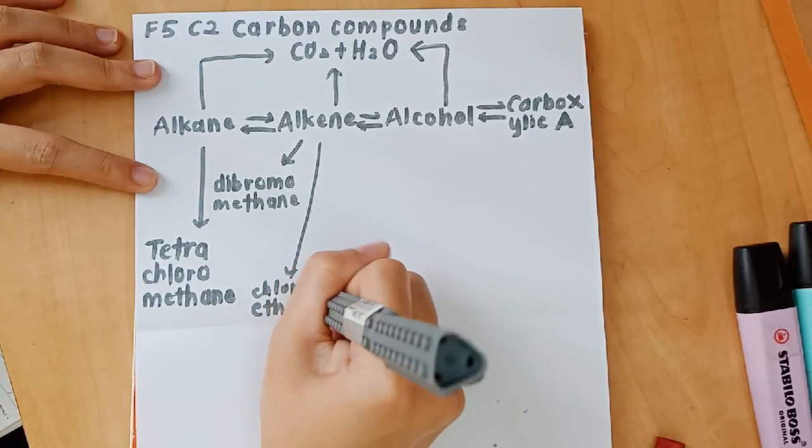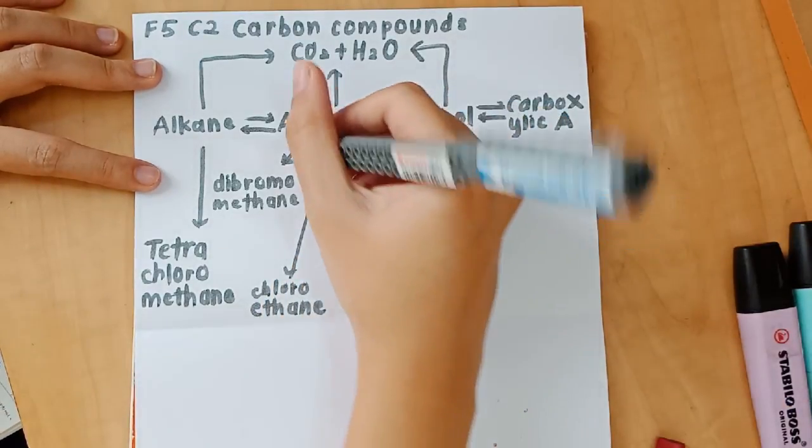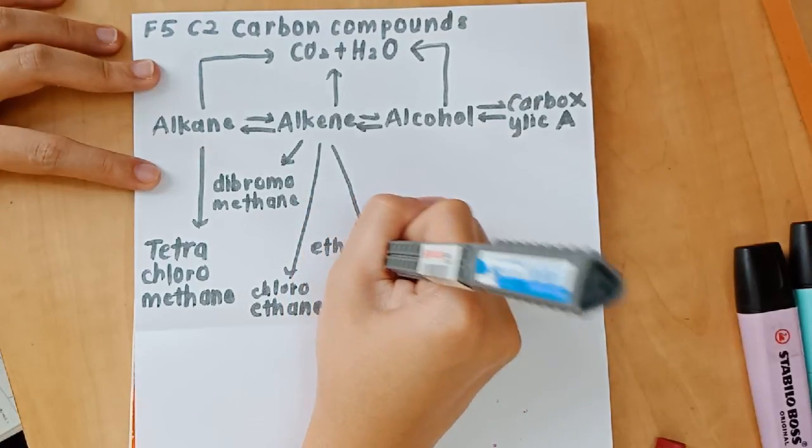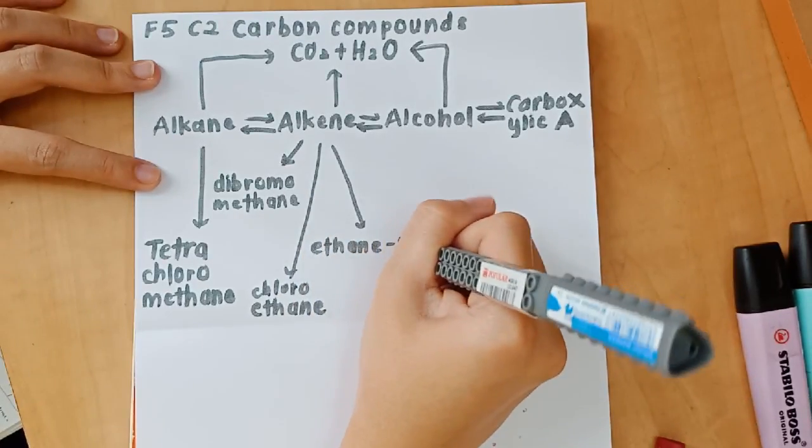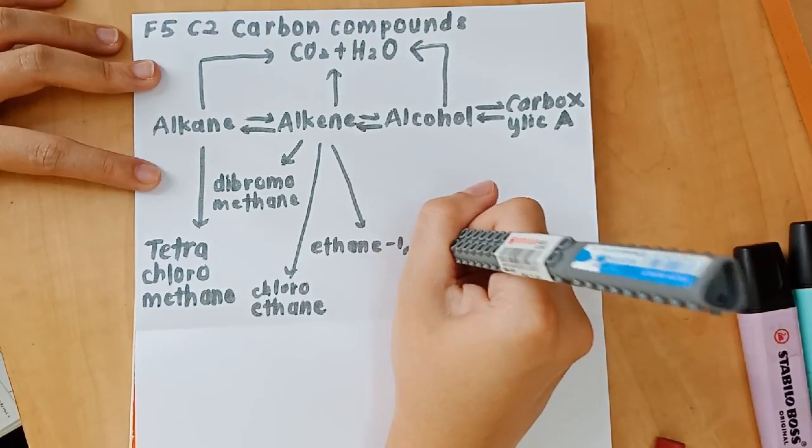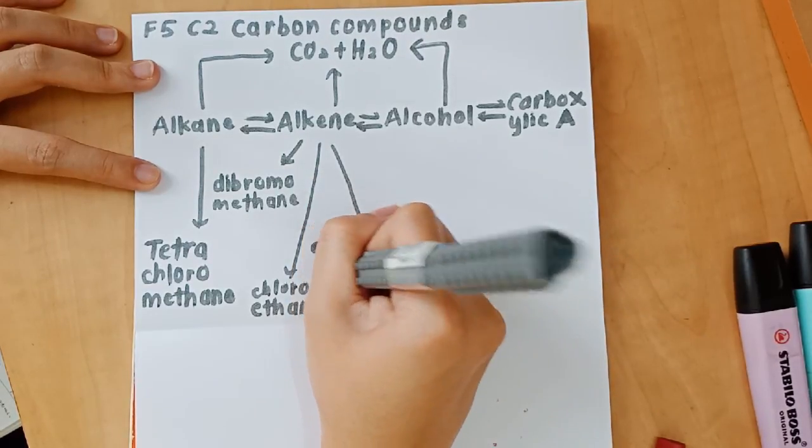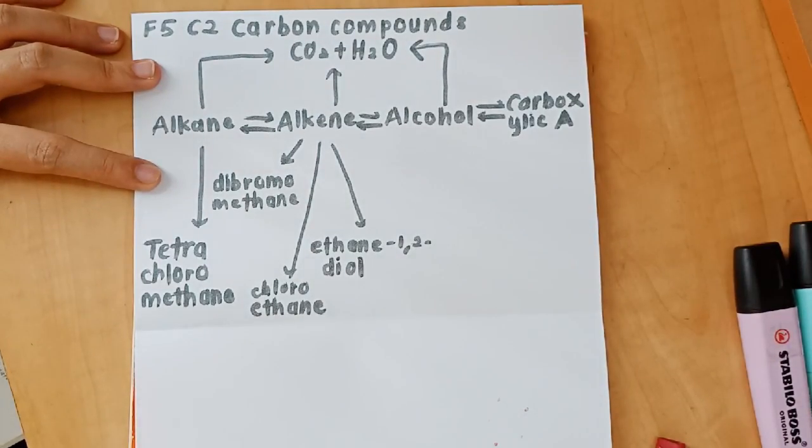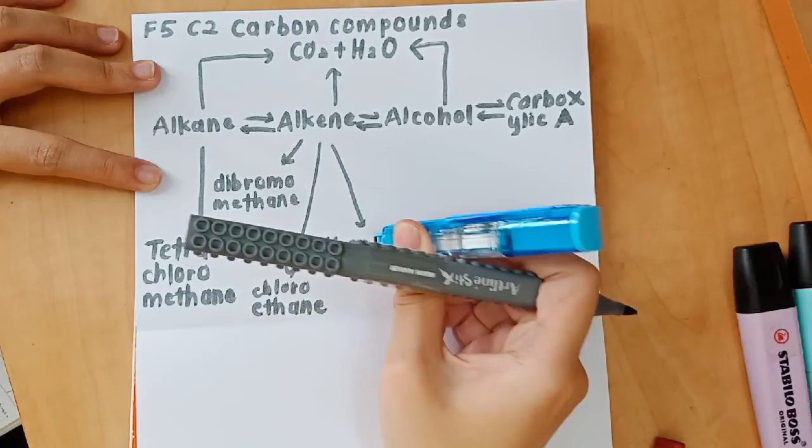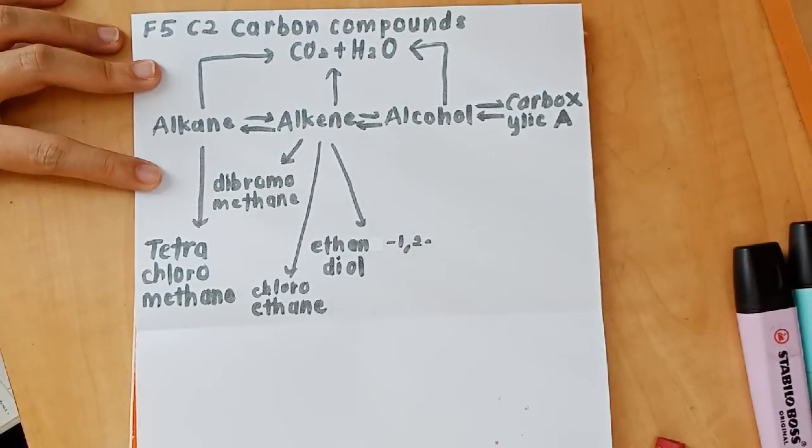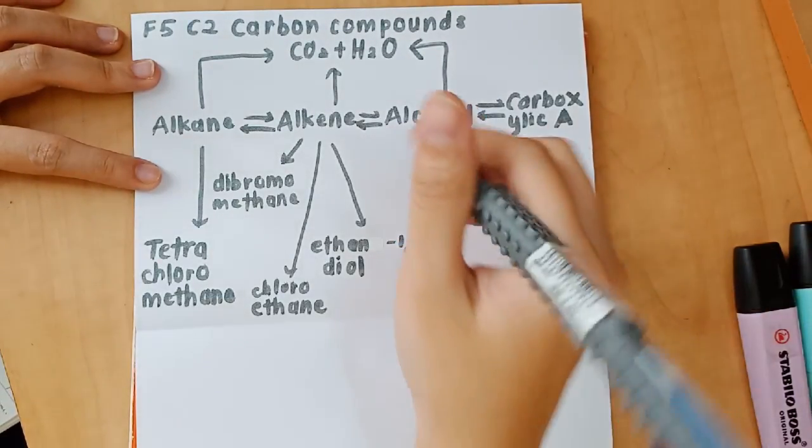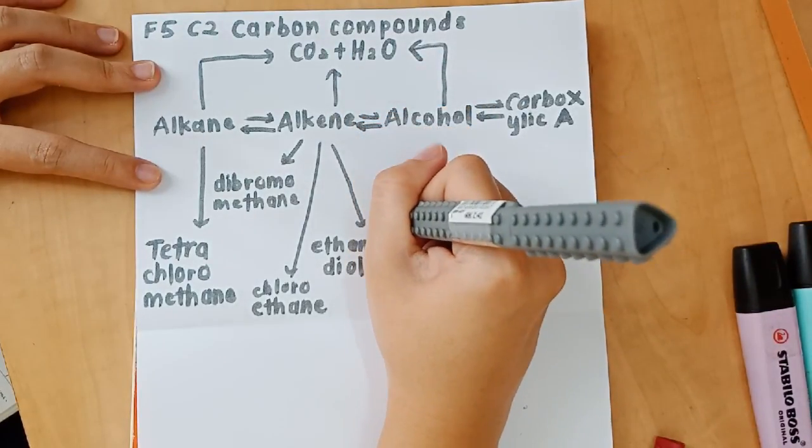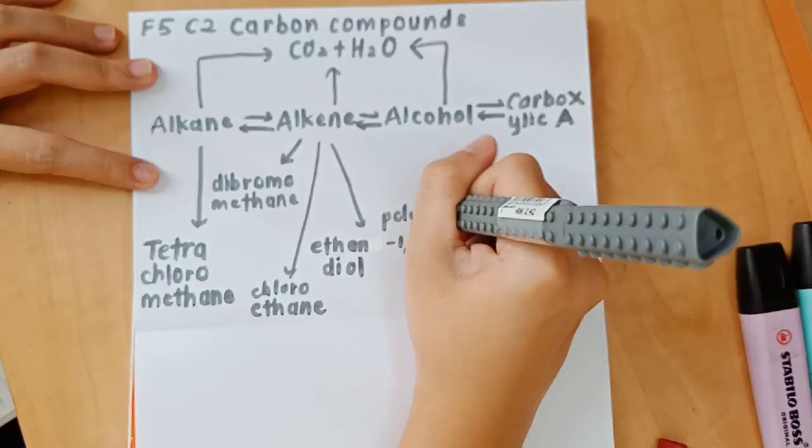And I think that this mind map just simplifies things so much for me back then. Because there were so many reactions to remember. You have to flip through and read every reaction. And I'm a big believer of chapter summaries. And this is the definition of chapter summary. It summarizes the entire chapter in one A4 paper. So I think that it is super useful.